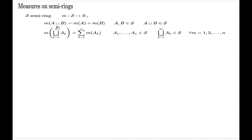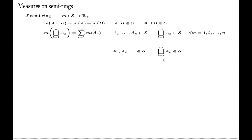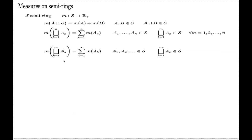You cannot make the infinity in this position — you cannot take infinitely many subsets in this identity. However, if you have a sequence of subsets which are elements of the semi-ring, pairwise disjoint, such that the union is also an element of the semi-ring, and if the measure of this countable union equals the sum of the individual measures, then the measure is called a sigma-additive measure. There are measures which are not sigma-additive, but if they satisfy this countable additivity property, we call them sigma-additive measures.